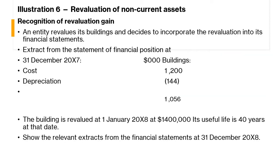Let's solve this question. An entity re-evaluated its building and decided to incorporate the revaluation into its financial statement. Extract from the statement of financial position at 31st December 2017: the cost of the building is 1,200,000 and accumulated depreciation is 144,000, so the carrying value is 1,200,000 less 144,000, which equals 1,056,000.